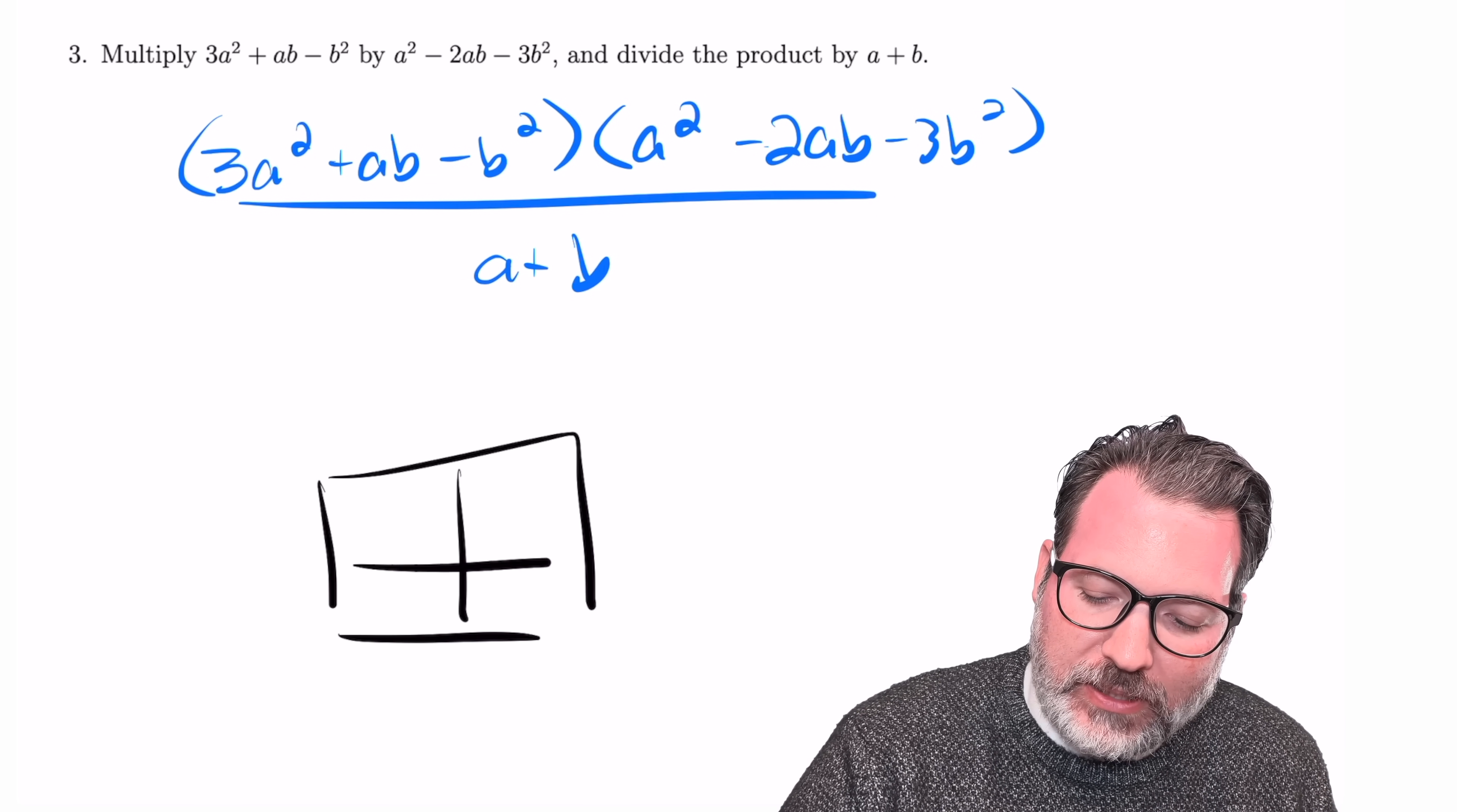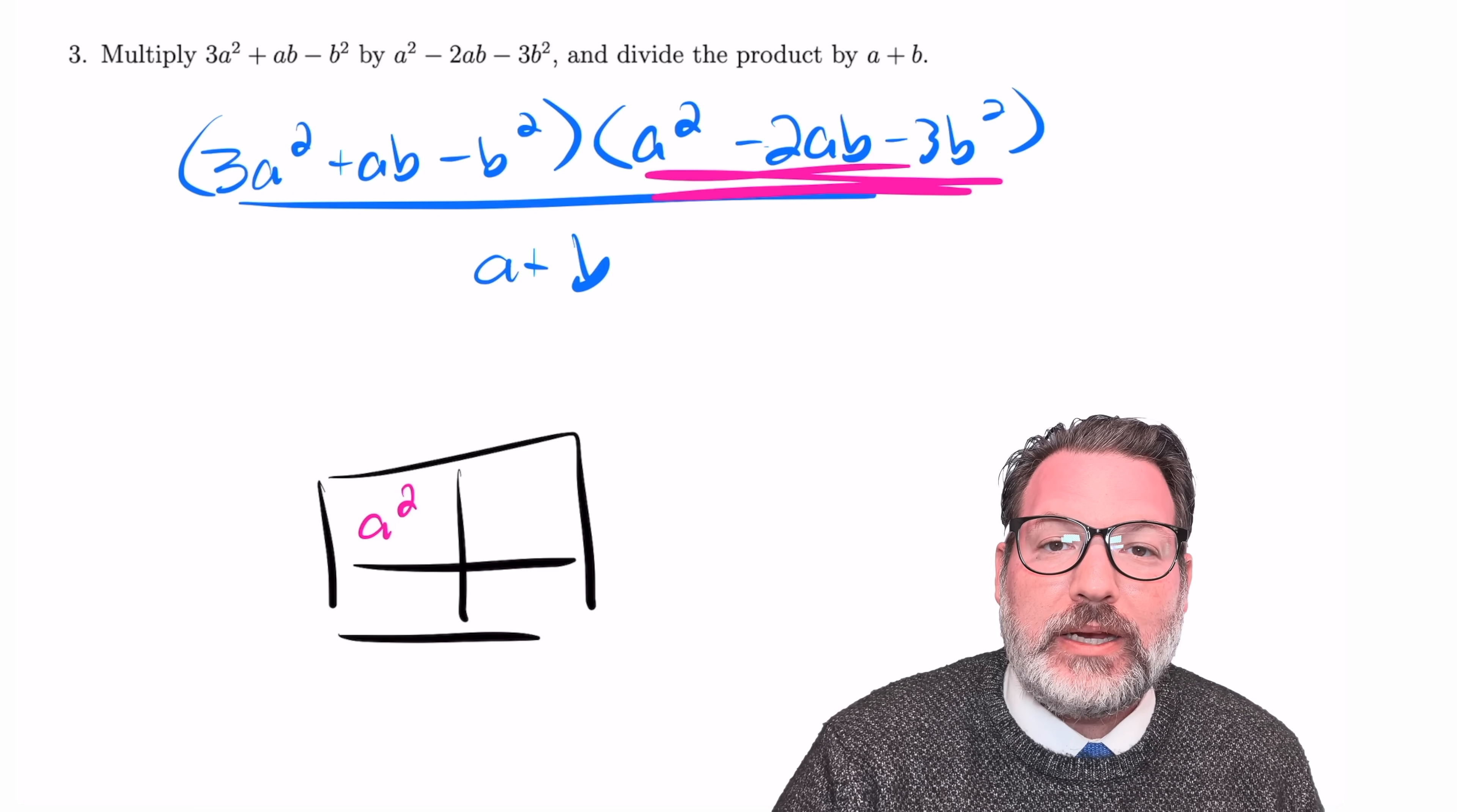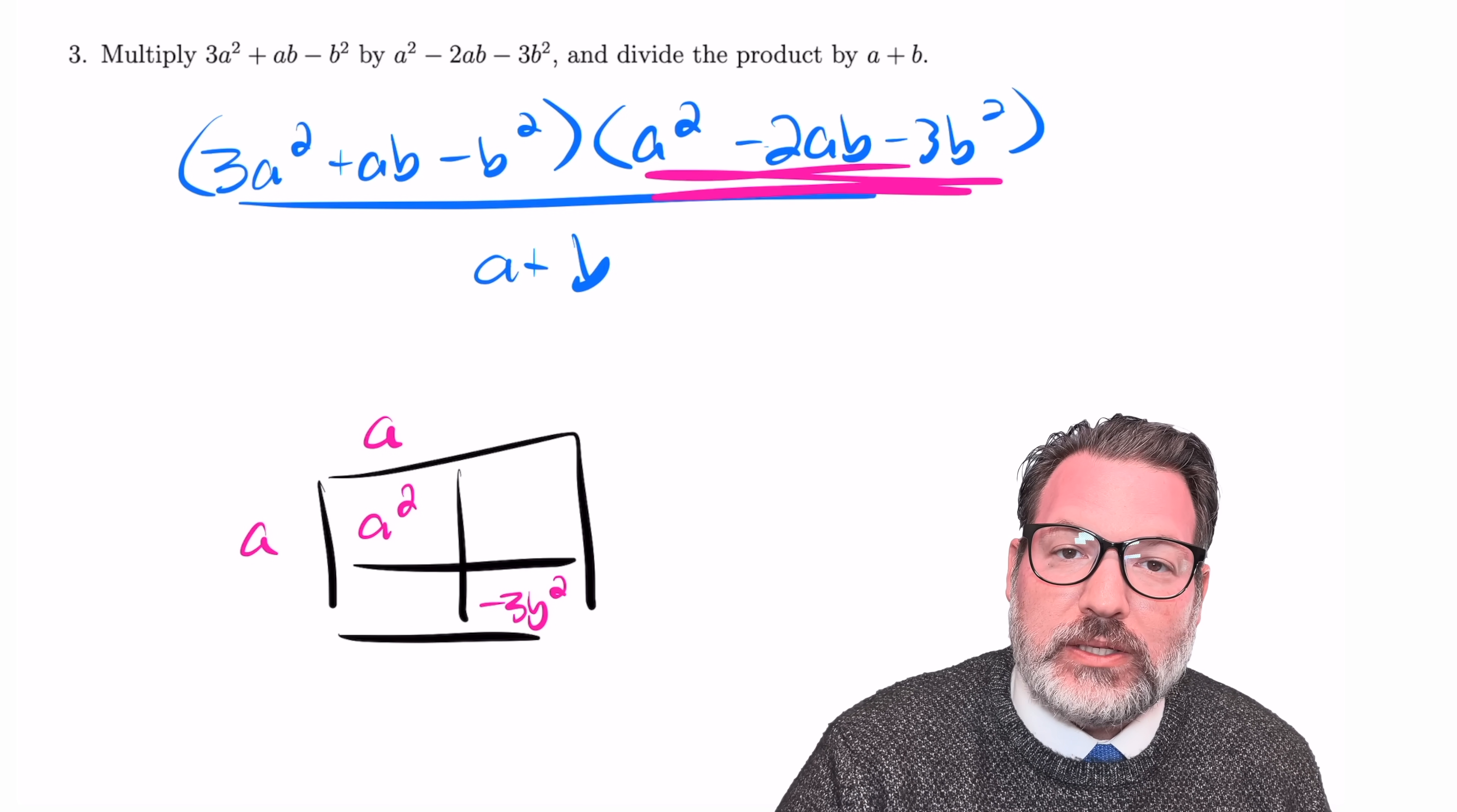And again, this is where the box method comes into play. Take a look specifically at that second trinomial, a squared minus 2ab minus 3b squared. If you imagine trying to put this into the box method, the area model thing, the a squared might come from that upper left-hand corner. In fact, it might come from a times a, right? And then the minus 3b squared, that would be the part that comes from the bottom right box. And again, there are only a few things that multiply to make negative 3b squared.